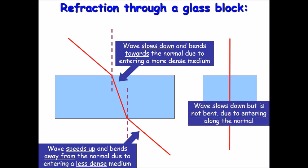If light enters perfectly straight into the block, it is slowing down but it is not bent, because it is entering along the line of normal. So if you shine the light straight into a glass block, it will shine straight through and will not refract.